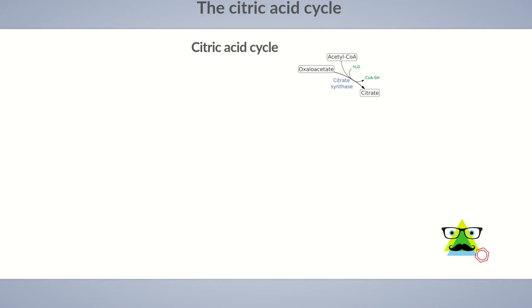Oxaloacetate serves as a carrier molecule for the acetyl unit. This is why the citric acid cycle can be seen as being split into two parts. In the first part, two carbon dioxide molecules are split off. In the second part, the carrier molecule is regenerated.